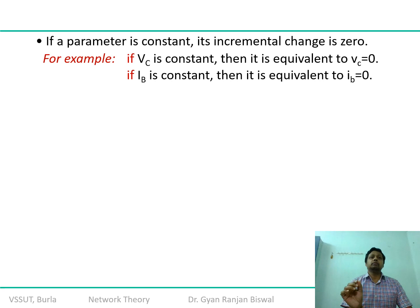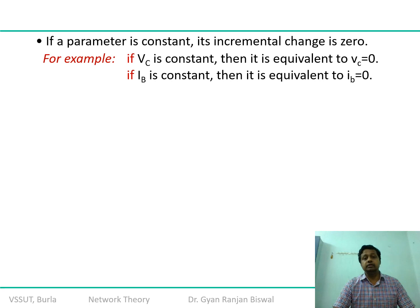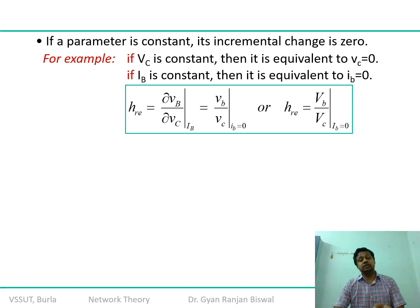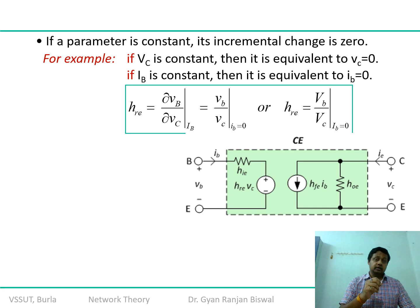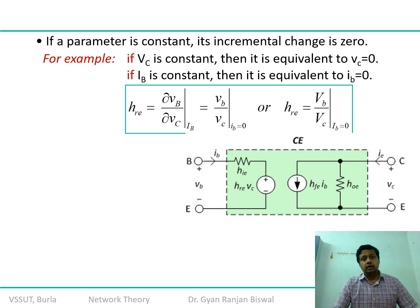If a parameter is constant, its incremental change is zero. If VCE has negligible change over a particular time band, we can assume the instantaneous change in VCE is zero — that justifies applying an open-circuit or short-circuit condition. This is the constraint: if a quantity is constant over a defined time period, its derivative is zero, validating the boundary condition.